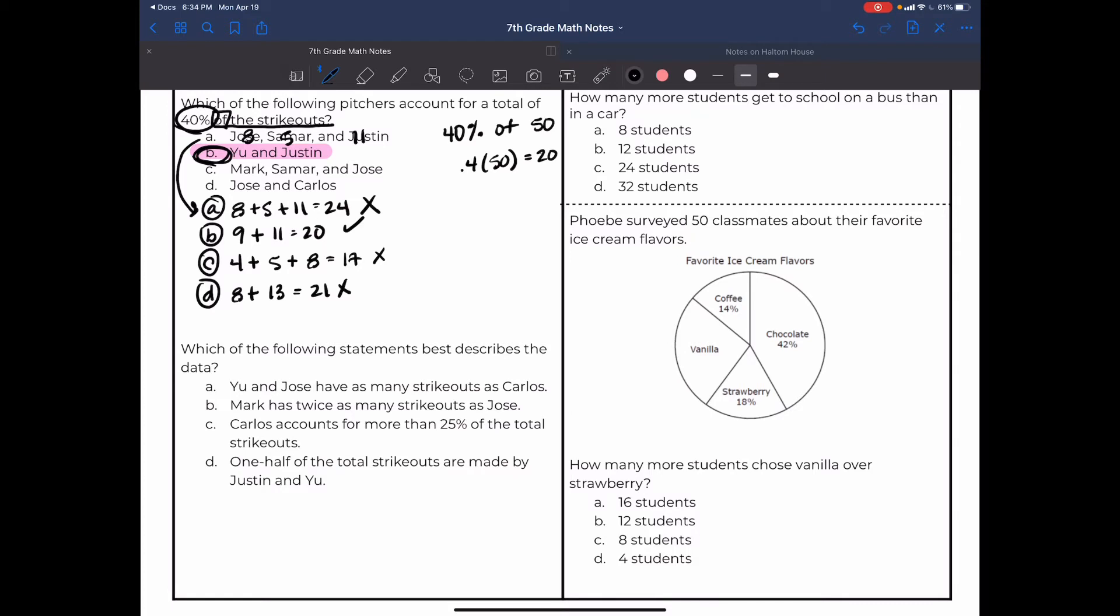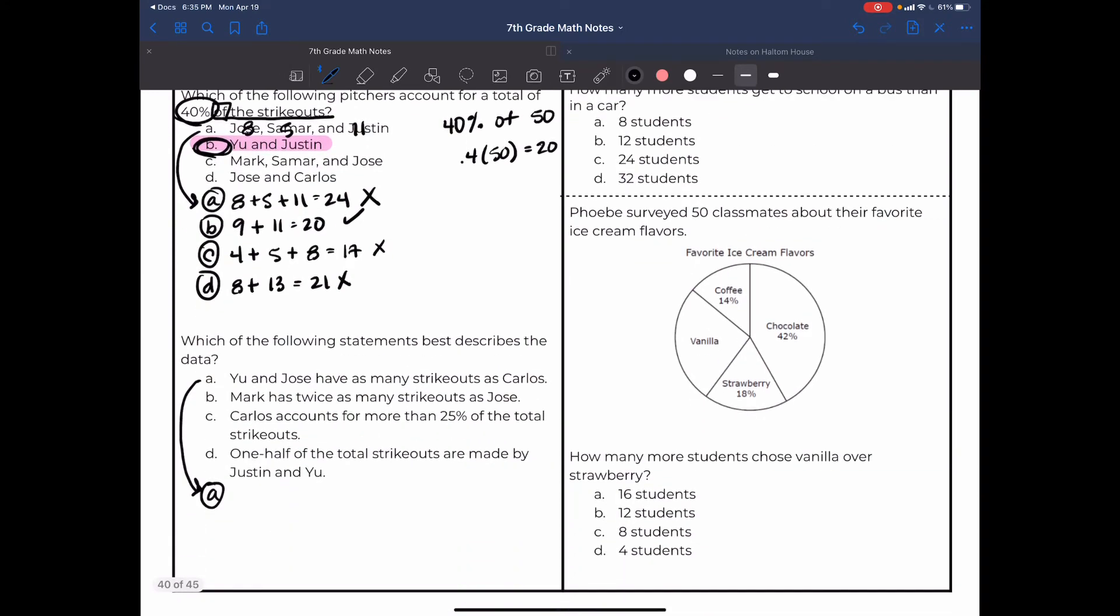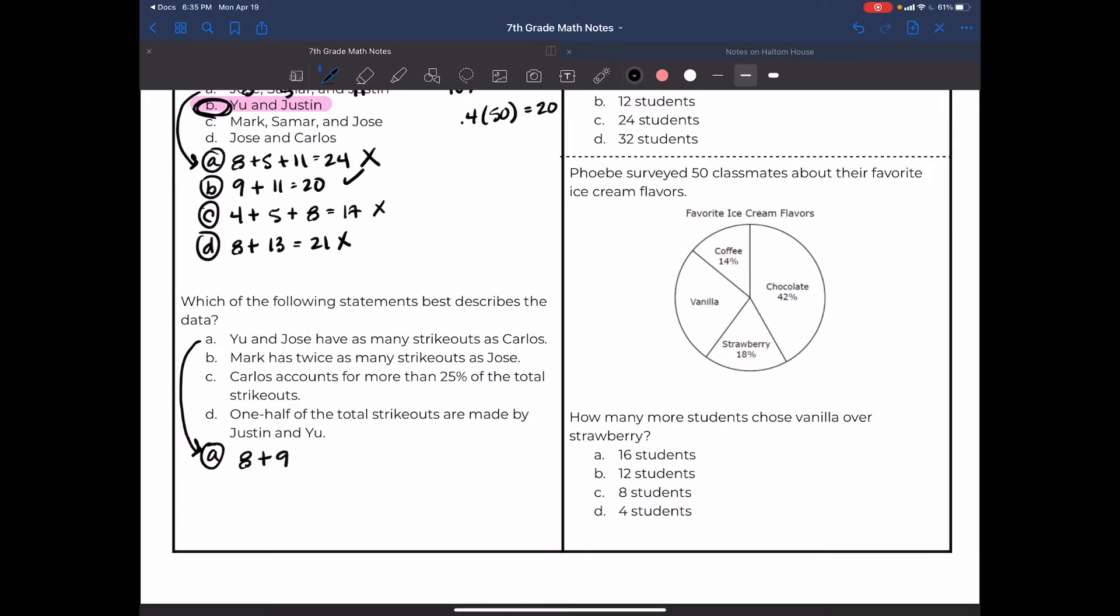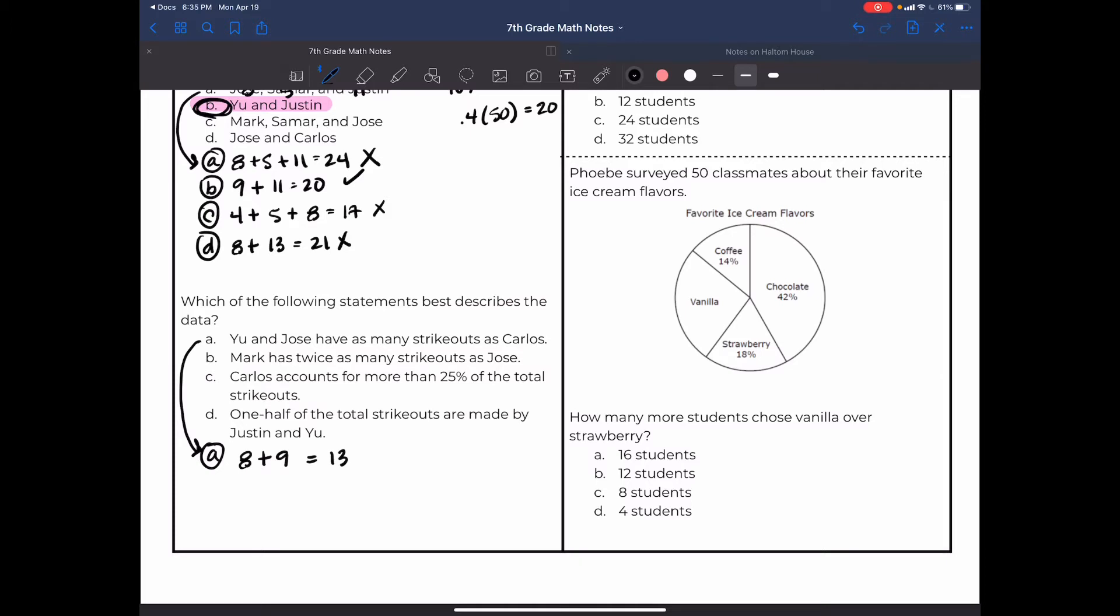Done! Okay, let's go through another one. Which of the following statements best describes the data? Yu and Jose have as many strikeouts as Carlos. So again, I'm just gonna put my work down here to kind of clean it up. Yu and Jose have as many strikeouts as Carlos. So first, Yu and Jose - Yu is 9, Jose is 8. Yu and Jose have as many, so that equals Carlos. Well, 8 plus 9 does not equal 13, so A does not look like my answer. Let me go back to the question just to make sure - am I trying to find the one that's true or not true? It says which of the following statements best describes the data, so I'm looking for the true answer. A is not true because Yu and Jose have more strikeouts than Carlos. How about y'all go through the rest of the answer choices and see what you get?